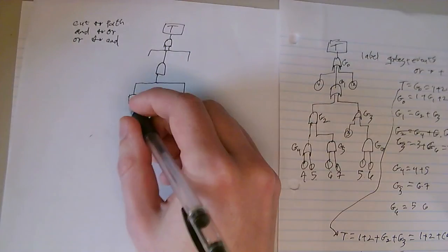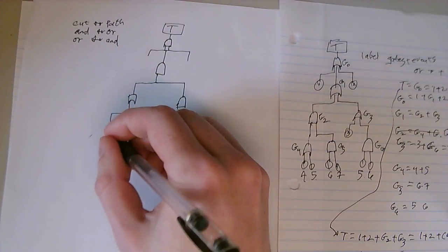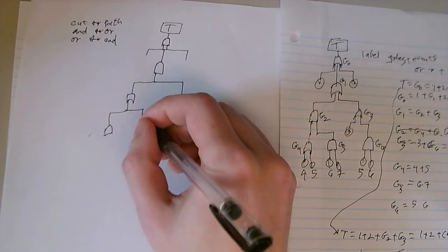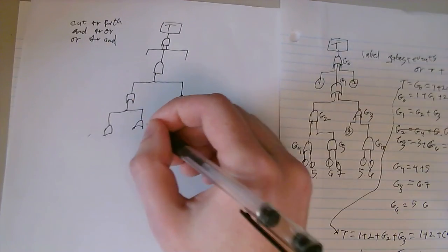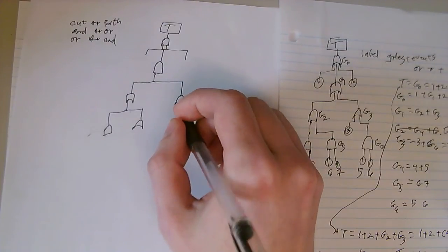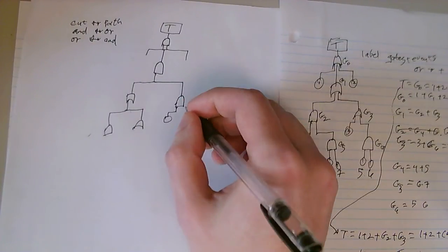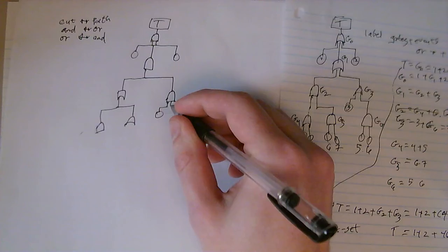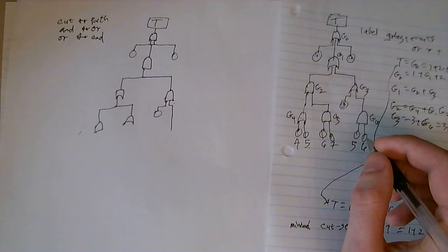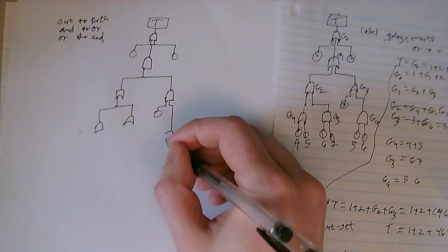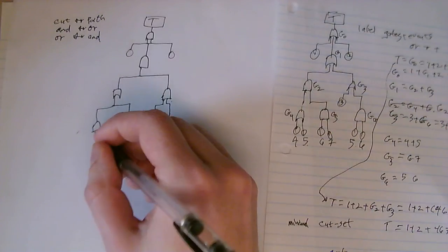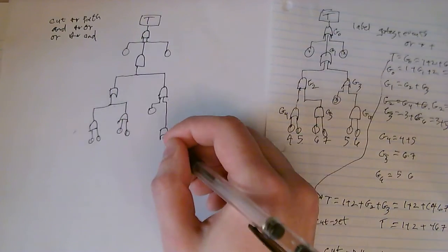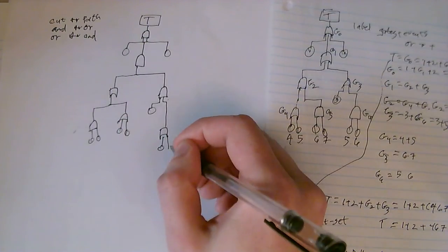And we have an OR gate here, which becomes an OR gate. And we have an event here, here, here, here, this AND gate becomes an OR gate, event, event, event, event, event, event, event.